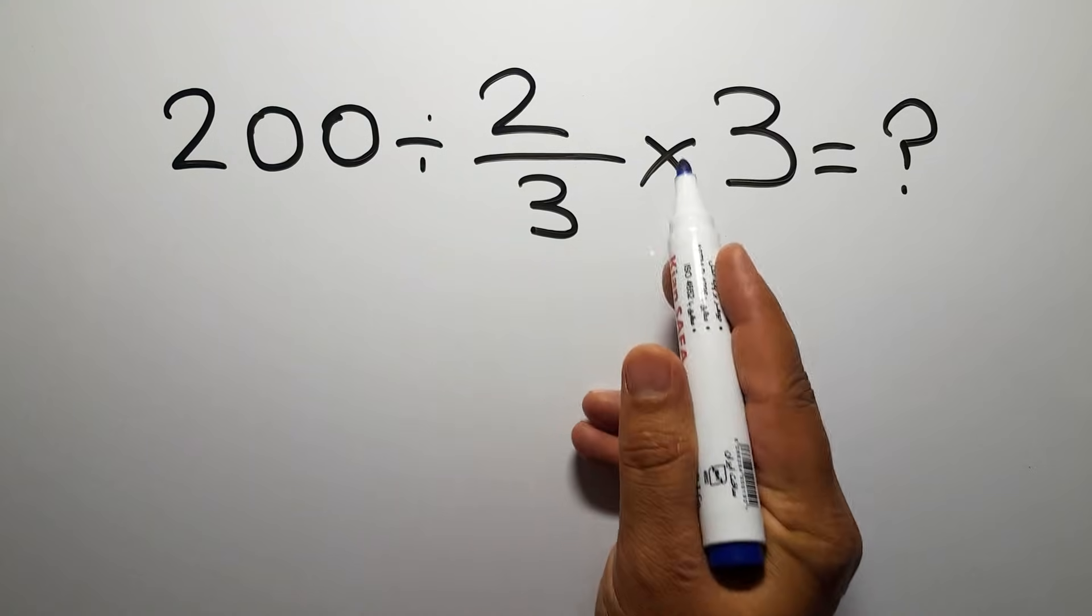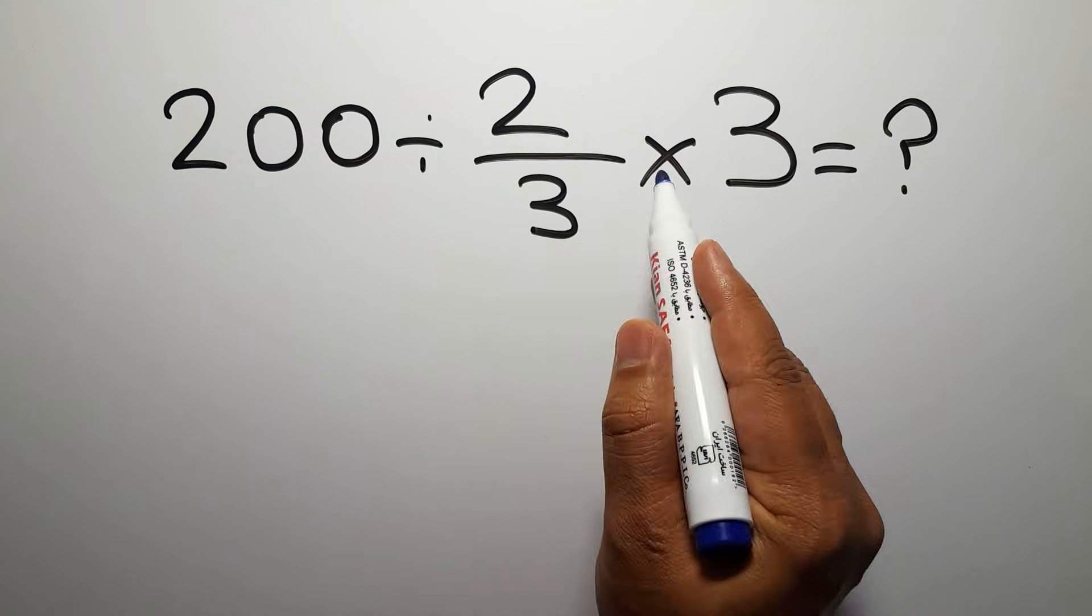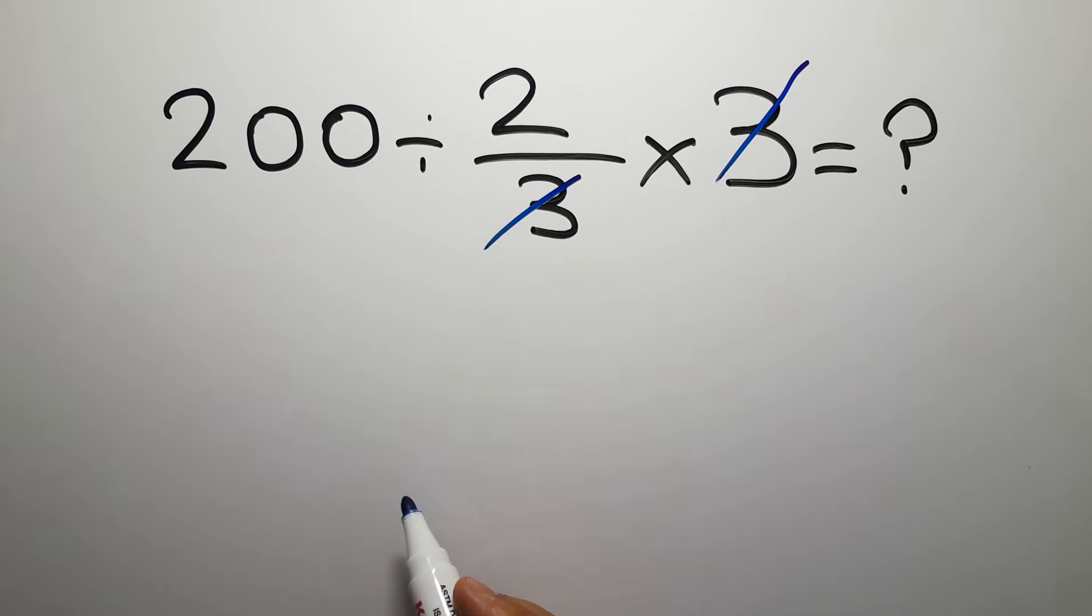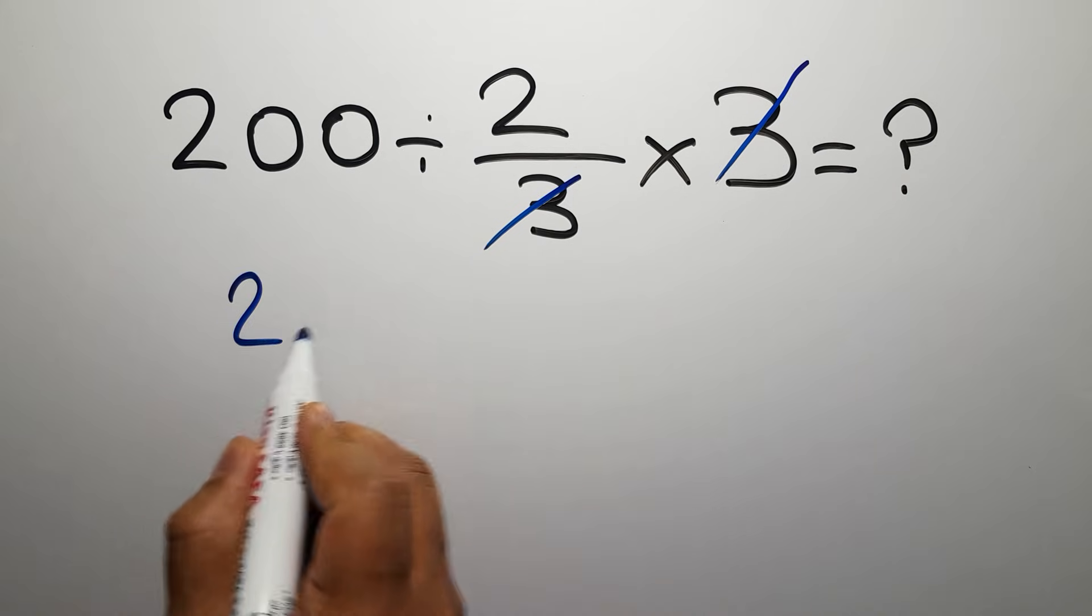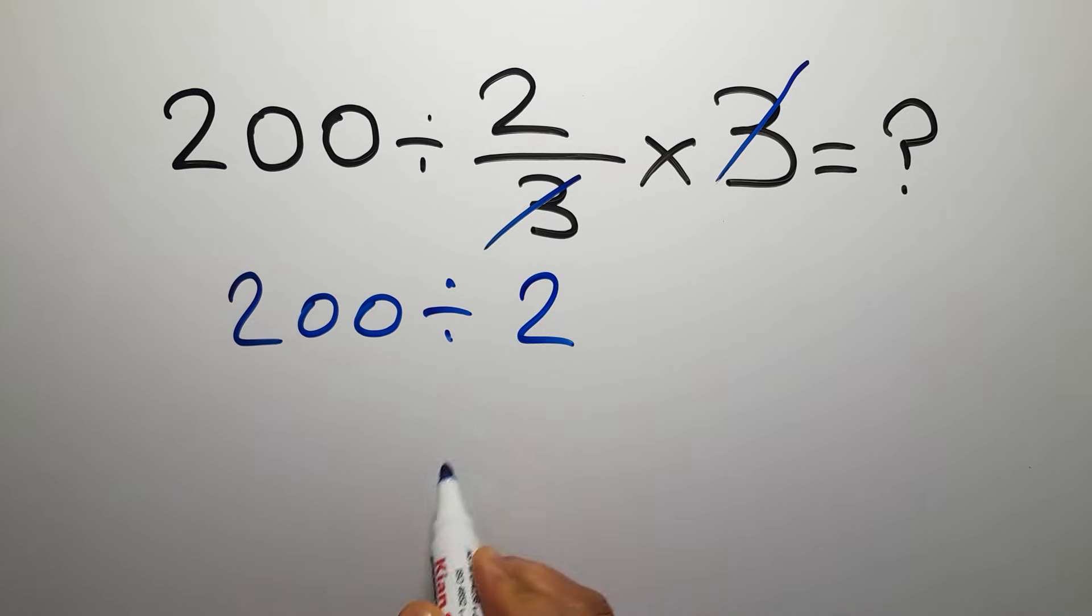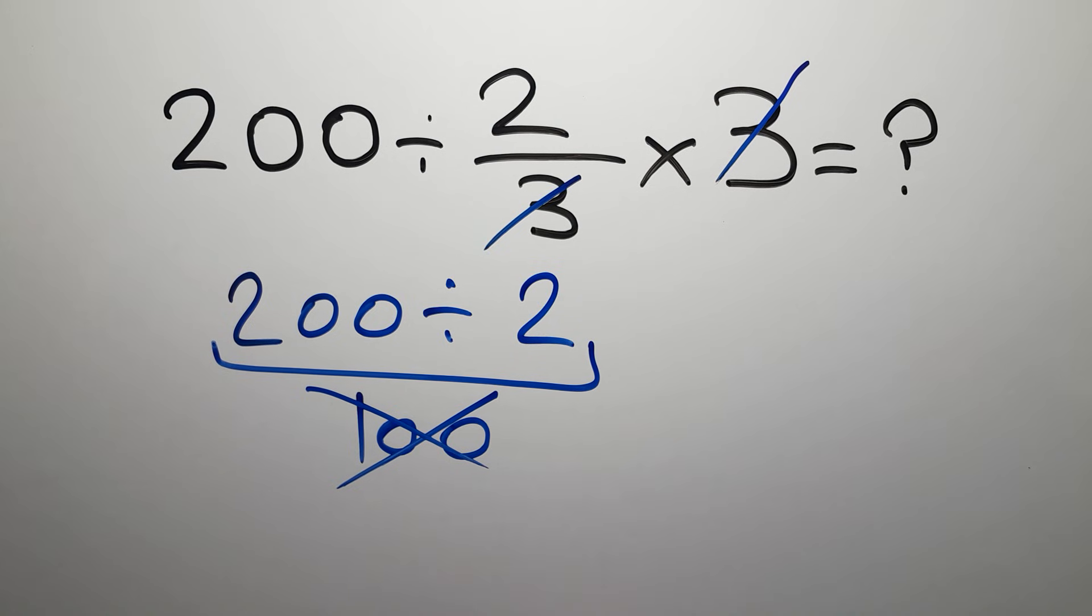First we do this multiplication: 2 over 3 times 3. We can easily cancel this 3 and this 3, so we have 200 divided by just 2, and this is equal to 100. But this answer is not correct because